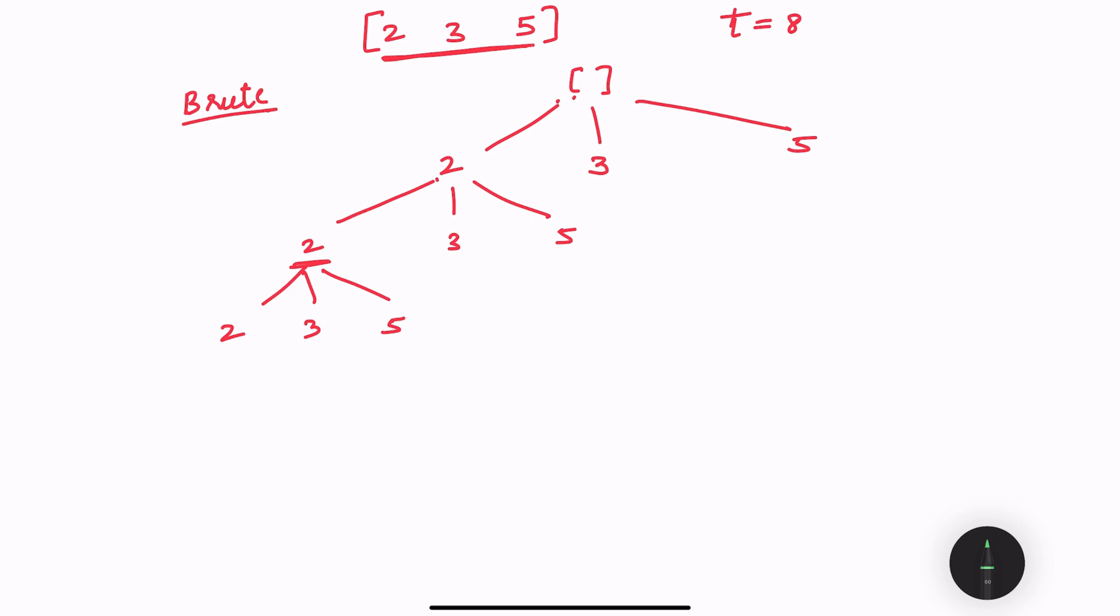So let's try one example over here. So starting with empty, when we are at this first 2, my total is 2, then if I'm going to this leg, my new total will be 4.